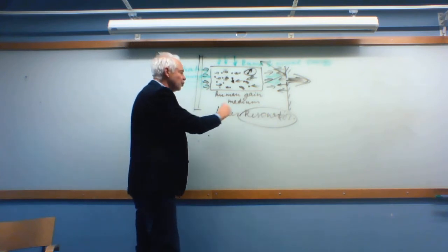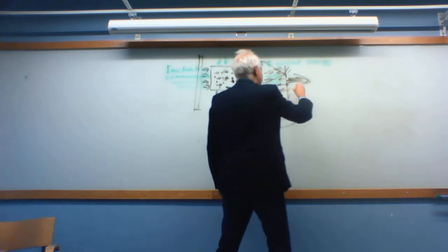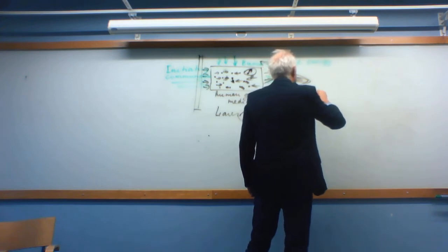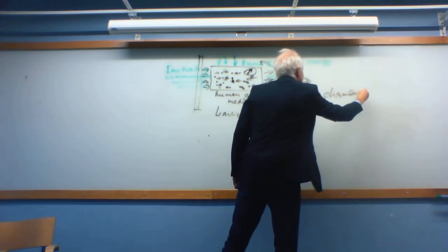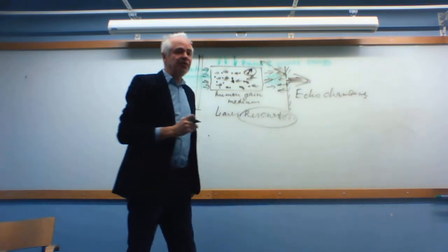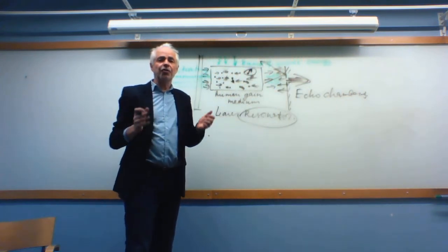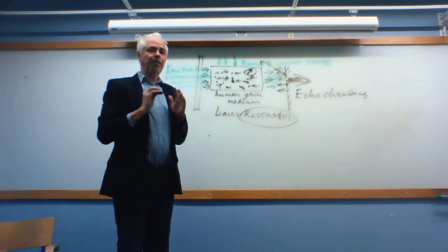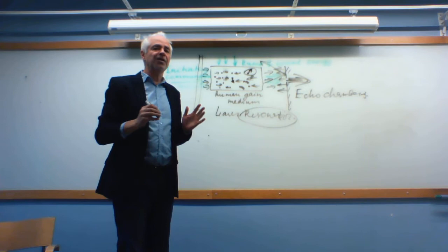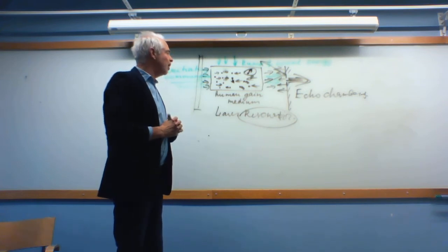The role of social laser resonator is played by echo chambers, different echo chambers which are done by variety of social networks. So social networks are a very important component of social laser. How does it work?